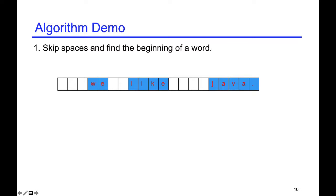Now, let's look at the algorithm demo. Step one, skip all the spaces and find the beginning of the word. We start from the index zero and skip every delimiter using a while loop.